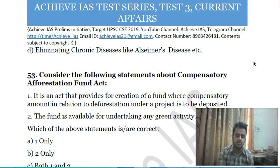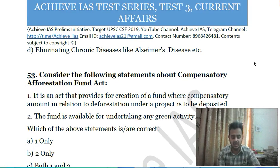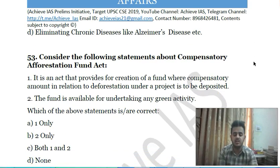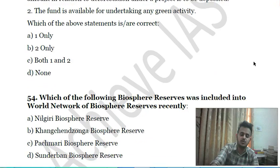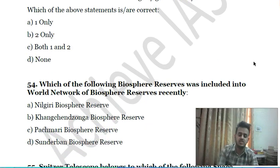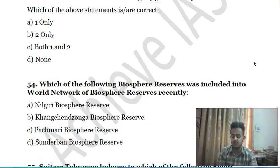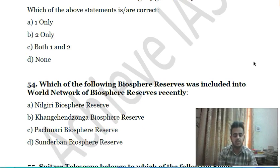Fifty-second question: consider the following statements about the Compensatory Afforestation Fund Act — first, it is an act that provides for creation of a fund where compensatory amounts in relation to deforestation under projects are to be deposited; second, the fund is available for undertaking any green activity. Choose the correct answer.